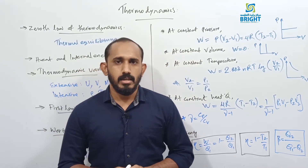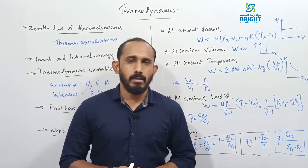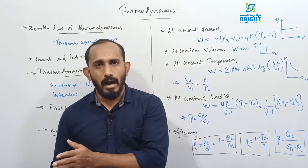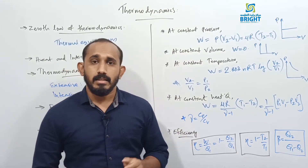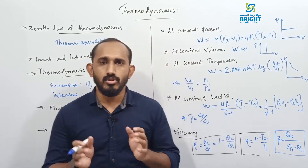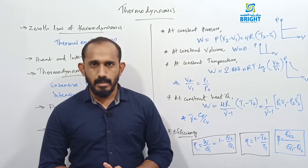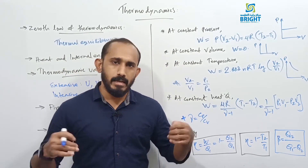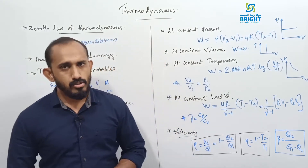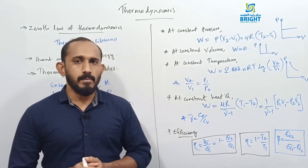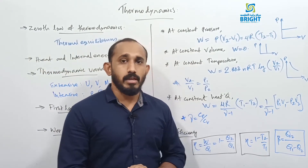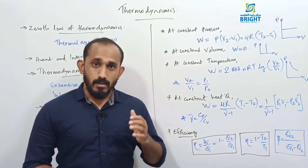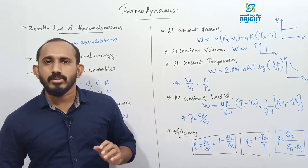The Zeroth Law of Thermodynamics is about thermal equilibrium. When two systems have the same temperature, we call it thermal equilibrium. Heat can flow from a high-temperature body to a low-temperature body through diathermic walls. If separated by an adiabatic wall, which does not allow heat to flow, there will be no flow of heat. The Zeroth Law states: if two systems are in thermal equilibrium with a third system, then they are in thermal equilibrium with each other.